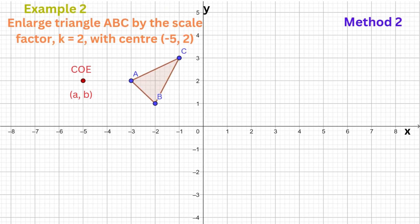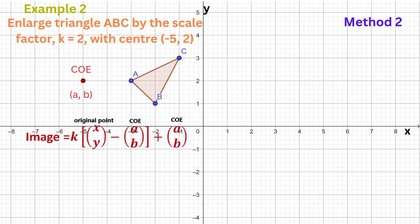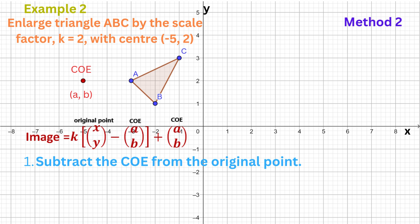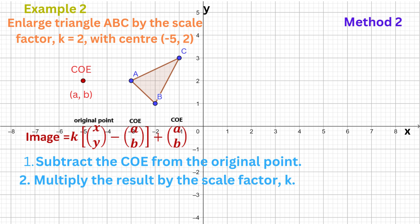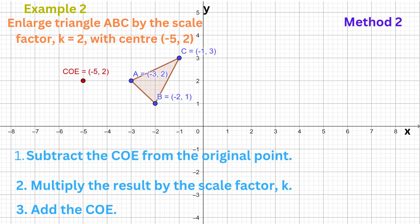Another way to perform the enlargement is represented by a formula: subtract the centre of the enlargement (a, b) from the original vertex (x, y), then multiply the result by the scale factor, then add the centre of enlargement (a, b) to get the image point. Let's put these instructions into practice.